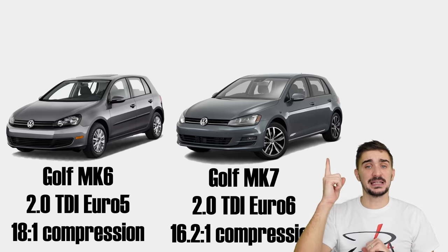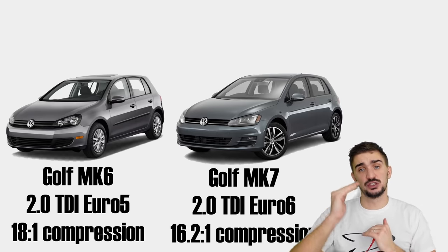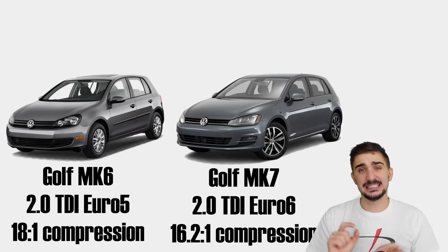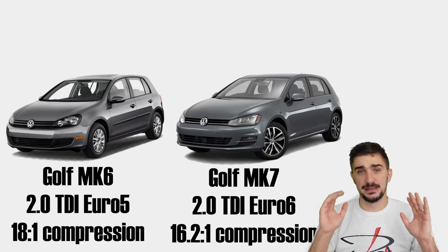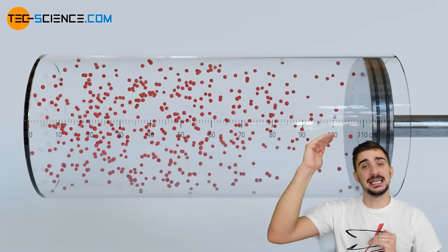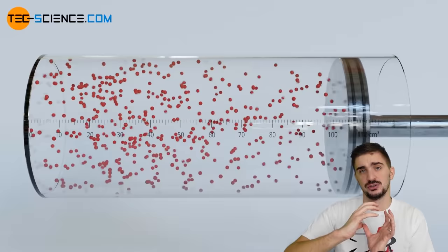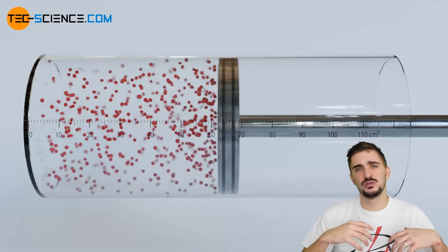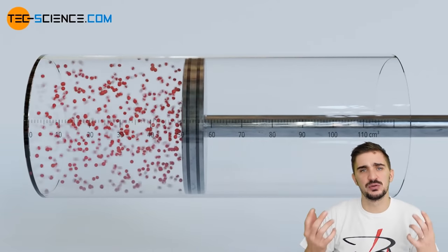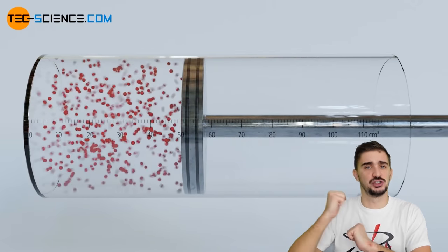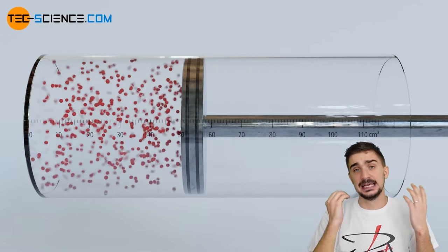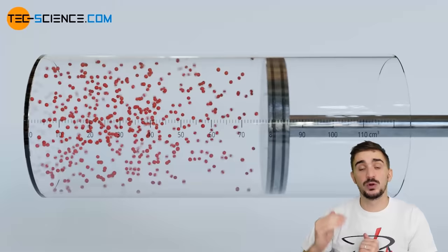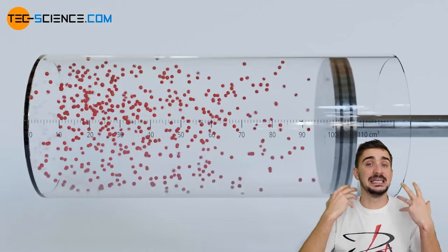But the greatest limiting factor when it comes to compression ratios in spark ignition engines is called knock, or NOC. When we compress gases, we bring their molecules closer together, so they bounce off each other more, which increases their friction and increases the temperature of the gas. Air is also a gas, so when we compress it, we heat it up.